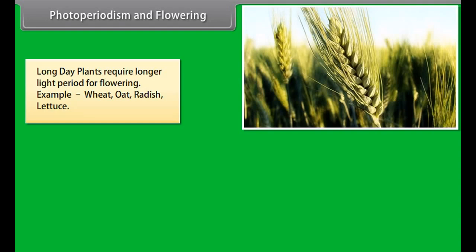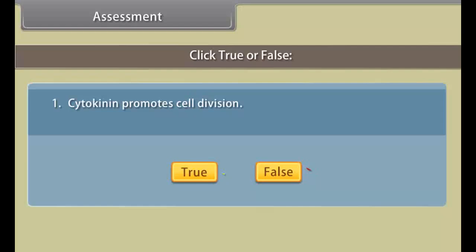Long day plants include wheat, oat, radish, and lettuce. Day neutral plants are not dependent on photoperiod for flowering. Examples: tomato, sunflower.